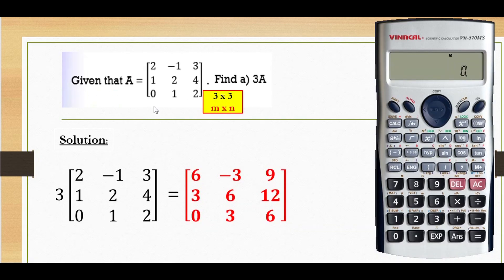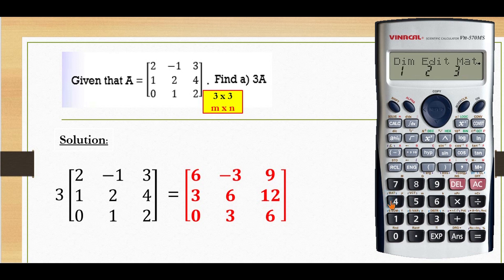Given matrix A, find 3 multiplied with matrix A. First of all, you have to press mode until you see MAT, number 2. Then press shift 4. In order for us to key in matrix A, press number 1. M times N — M is the row of the matrix, so M is 3. And N is the column of the matrix, so N is 3.